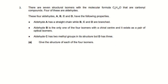Moving on to question 3: there are seven structural isomers with the molecular formula C5H10O, and they are carbonyl compounds. A carbonyl compound is either an aldehyde or a ketone because it has a C=O group. Four of the seven are aldehydes — A, B, C, D — with the following properties. Aldehyde A has a straight chain while B, C, D are branched.